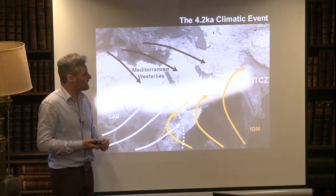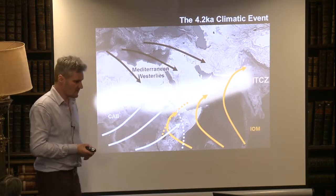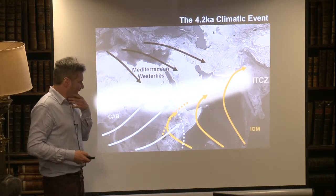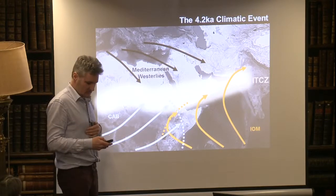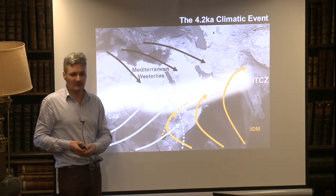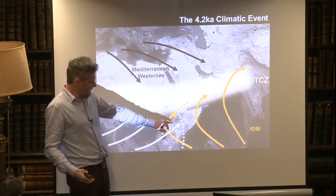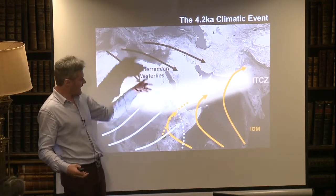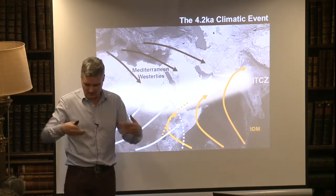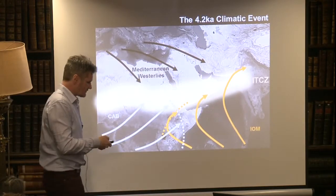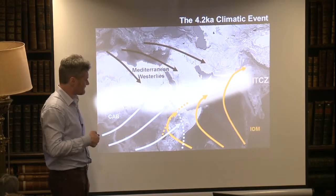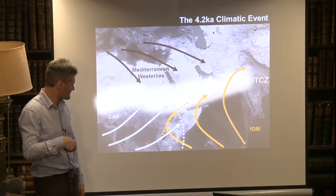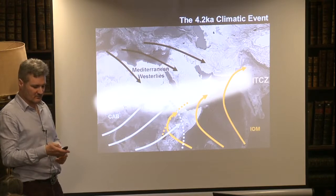There is something at this time period called the 4.2ka event — essentially 4,200 years ago — recorded as a drought, particularly in Mesopotamia. What scholars believe caused it was a failing of the Indian Ocean monsoon, which was responsible for the Nile flood: rain came in off the Indian Ocean, hit the Ethiopian highlands, and that's where most of the floodwater came from that provided irrigation for crops in Egypt. So if the Indian Ocean monsoon failed around this time, Egypt would also be affected — though it's a complex picture because Nile floodwaters are also influenced by the Congo air boundary and Mediterranean westerlies.